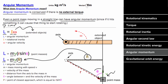Angular momentum is a vector, and it's easiest to think of its direction as being either counterclockwise or clockwise depending on which way the object is rotating. The units are kilogram·meter²/second.